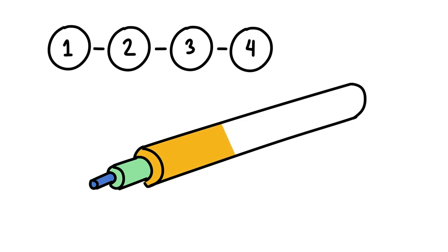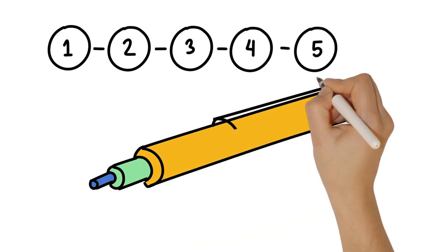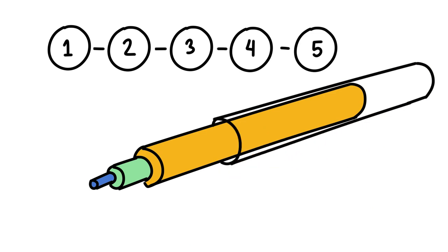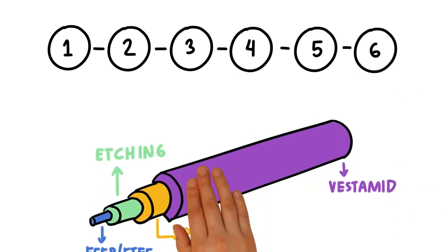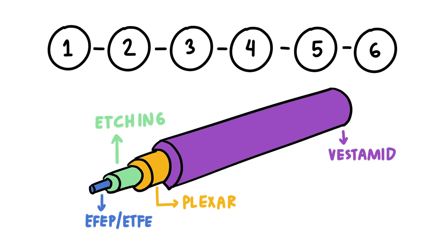Fourth, extrusion of Vestamid Piba on Plexar. Fifth, a sleeve layer of fluoropolymer lining for heat shrinking. Sixth, finalization of multi-layer catheter product.